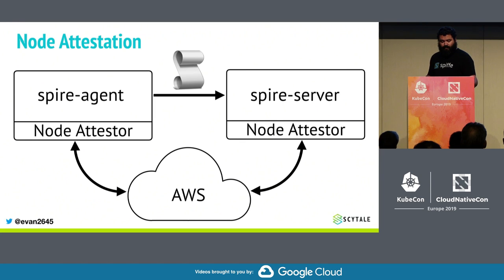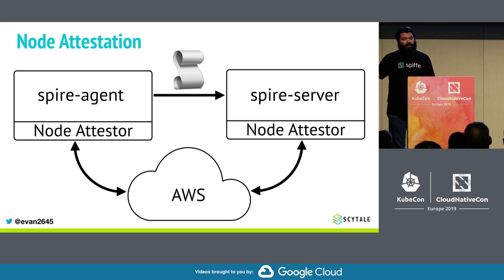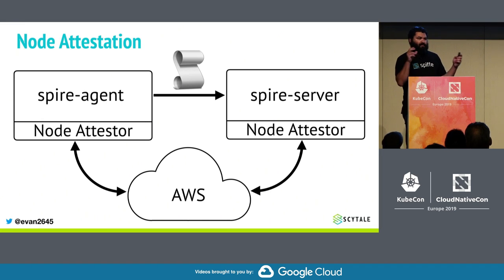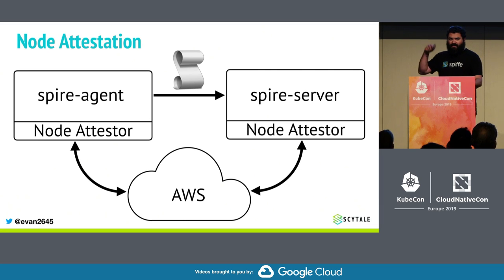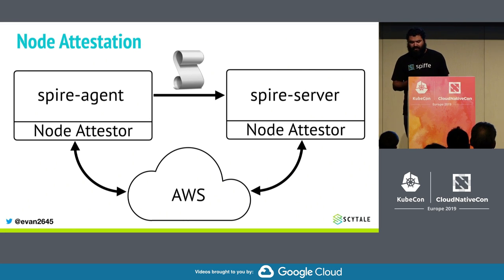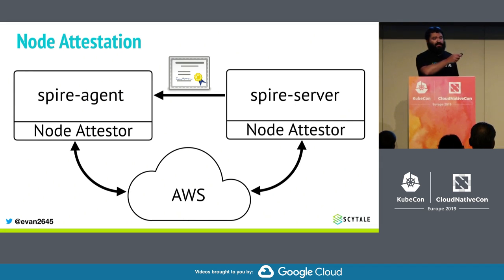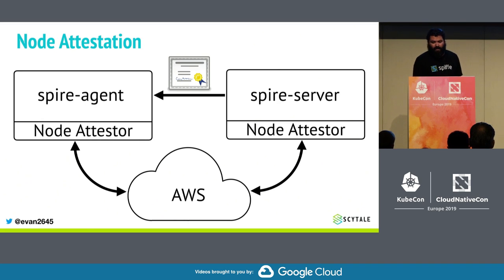The attester on the server side receives this document and calls the AWS API. At this point it can verify all sorts of things — is the instance freshly booted, does the disk look like it's been tampered with? You can plug in any kind of validation logic that makes sense for you. Once all checks pass, the server issues the agent an SVID that uniquely identifies that particular agent on that particular platform. Going forward, all connections between the agent and the server are done with mutually authenticated TLS using this agent identity as the client certificate, allowing us to differentiate exactly which agent is which.